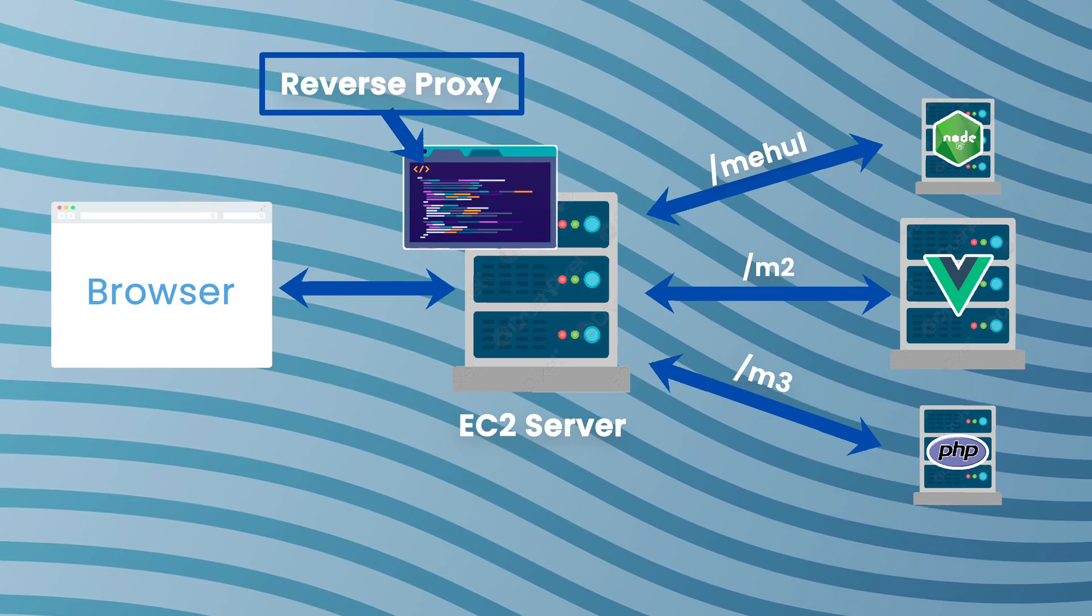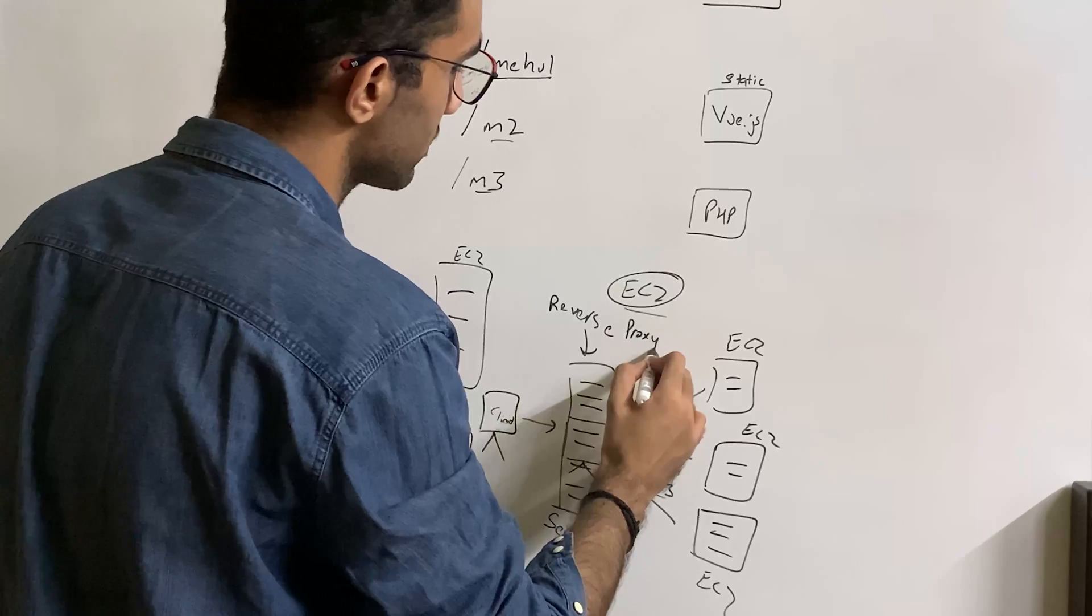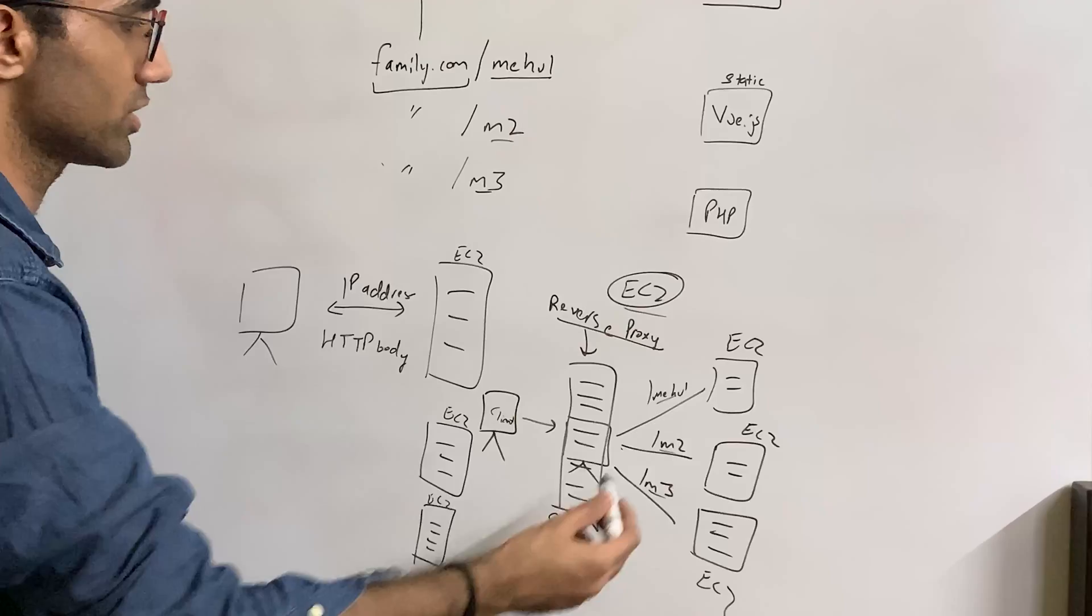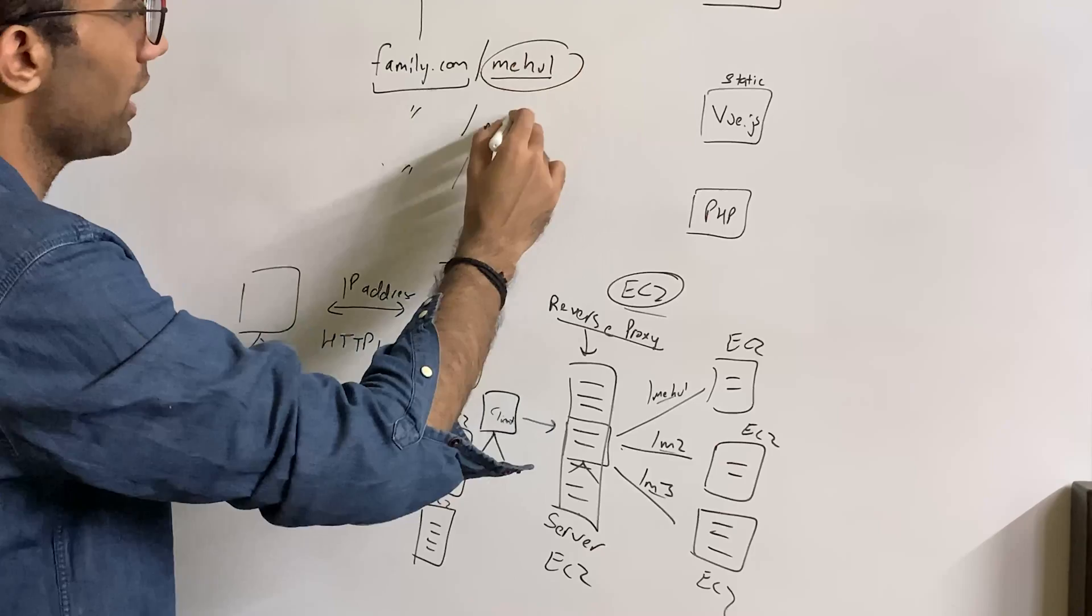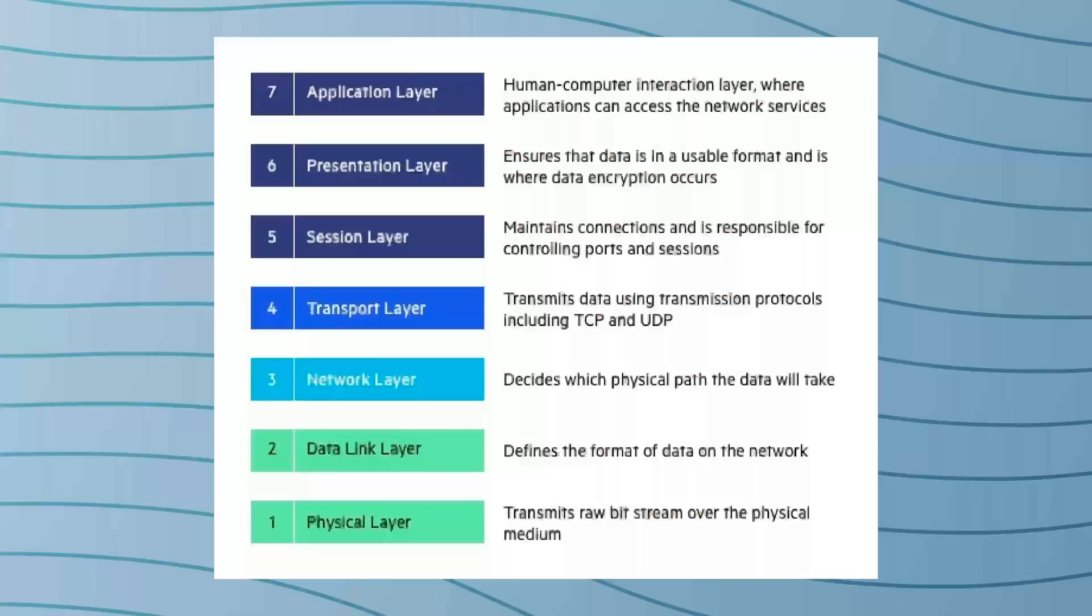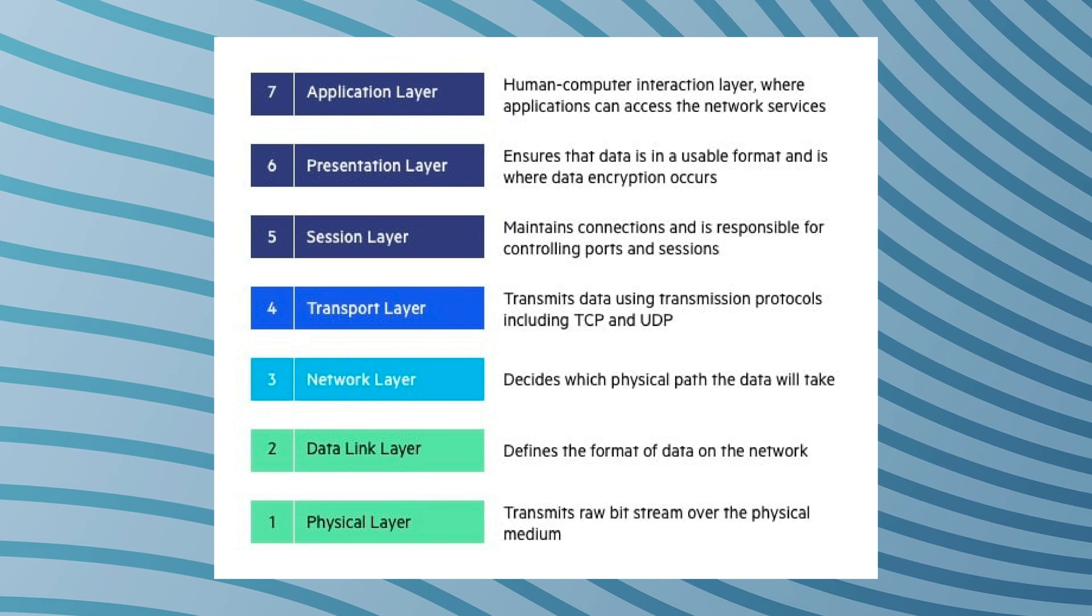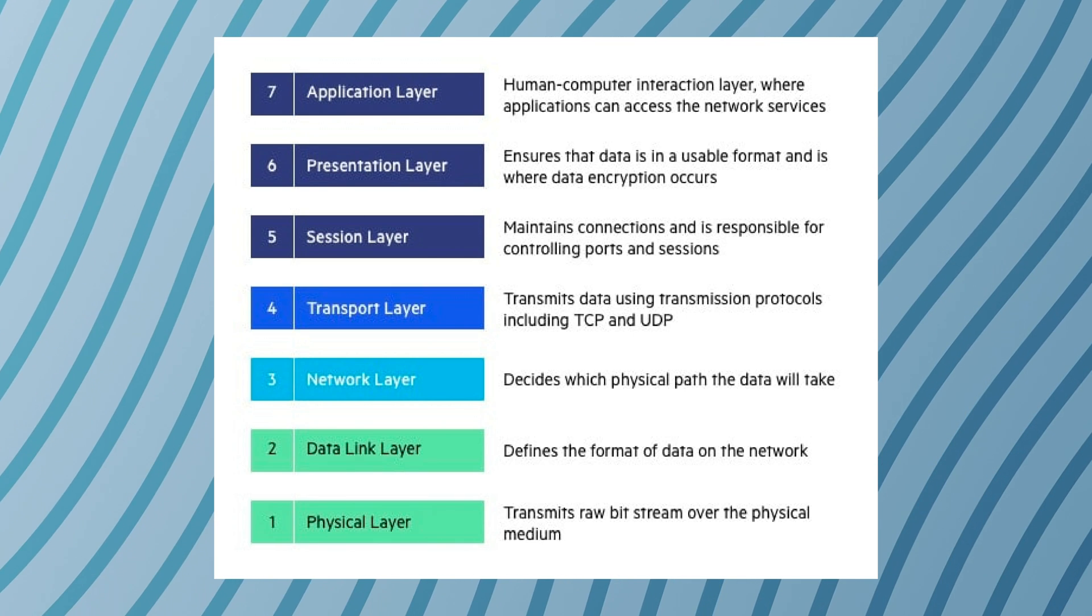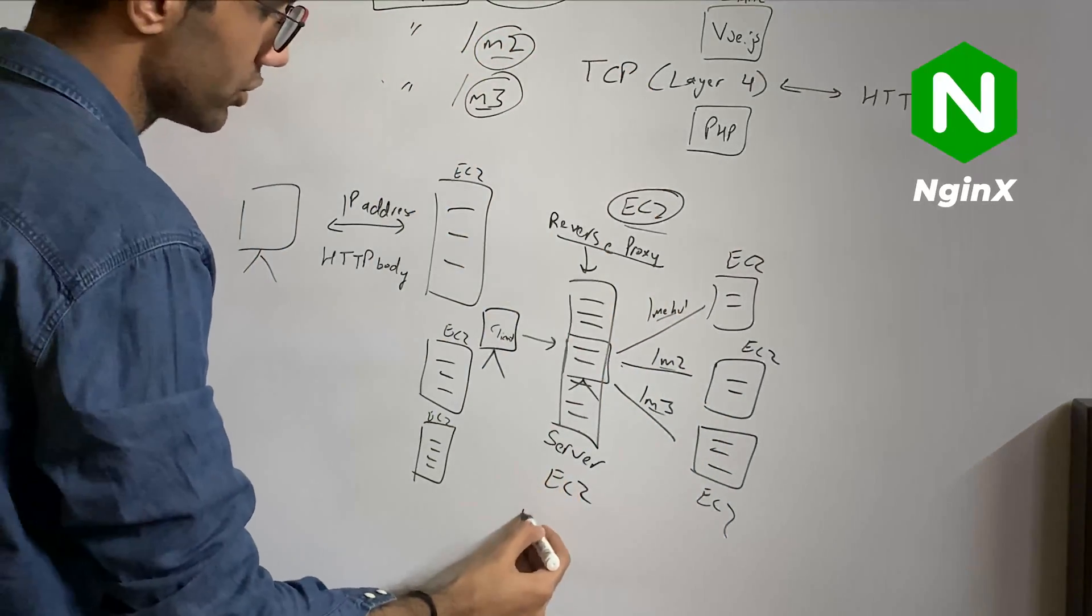So this might as well be EC2. Now this is interesting because these can be separate EC2s, and this software which does this right here is called a reverse proxy. It's as simple as that. Reverse proxy is just a piece of software which does this mapping in some way, which does this direction of control in some way. Now this is not specific to just path. It could be pretty much any criteria from TCP, that is layer 4, I think layer 4 is the lowest you could go in nginx, to all the way to HTTP which is your application layer at layer 7.